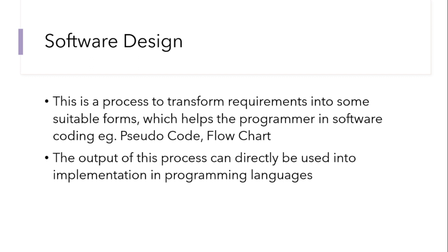In our previous lesson we looked at software specification, that is gathering the various software requirements. After the software requirements have been gathered, we develop them into various charts or diagrams that serve as a guide for the software developer — placing them into a form or structure that is easily understood and easily convertible into a form that can be executed on a computer. Examples of these diagrams include pseudocode, which uses mnemonics to explain how each process should go, and then the flowchart, which shows the flow of how the software should actually work.